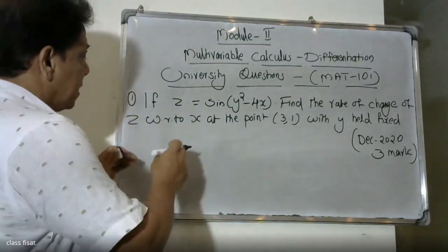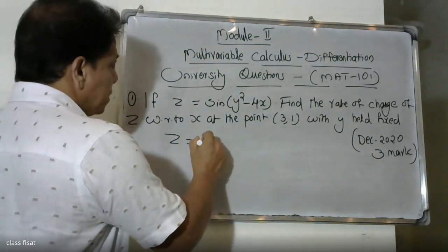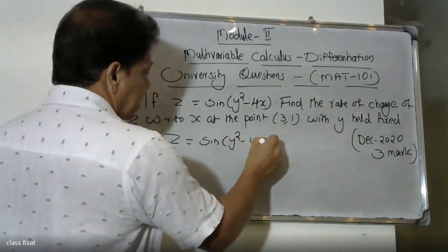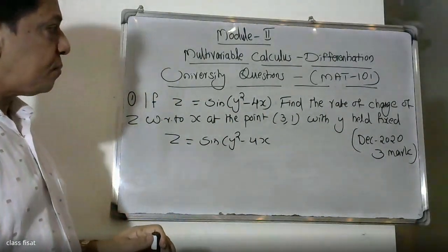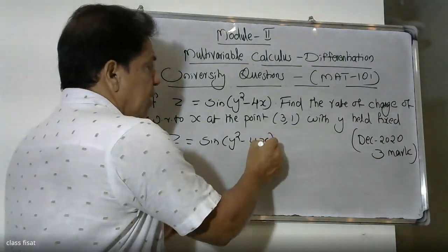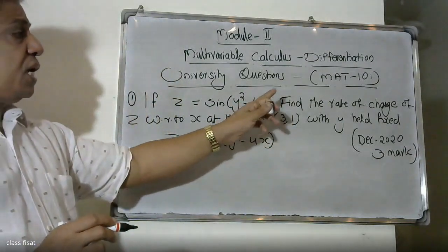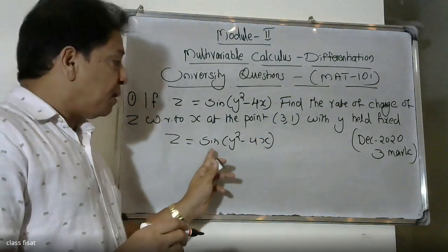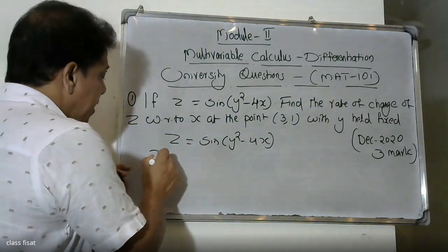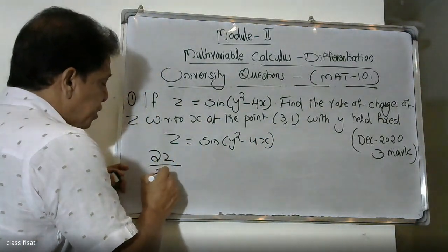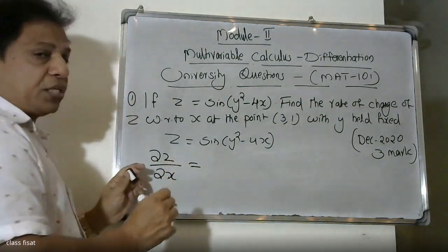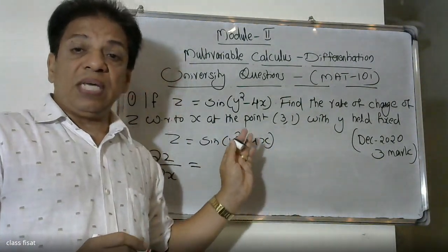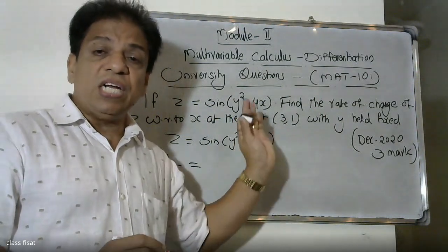Z is equal to sine(y-squared minus 4x). I will find the rate of change of Z with respect to x, that is the partial derivative of Z with respect to x, for the function sine(y-squared minus 4x).